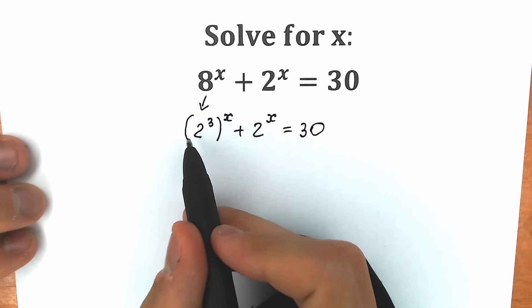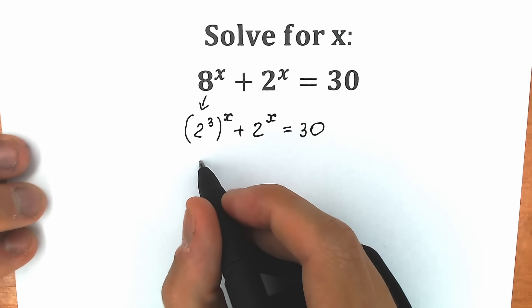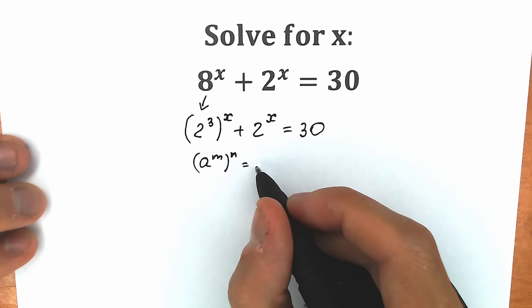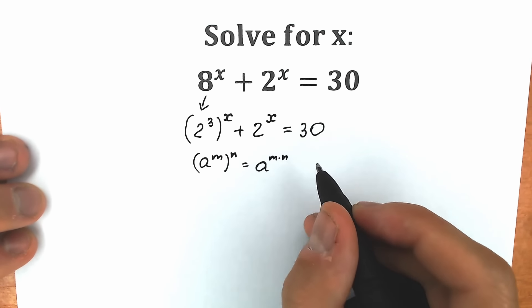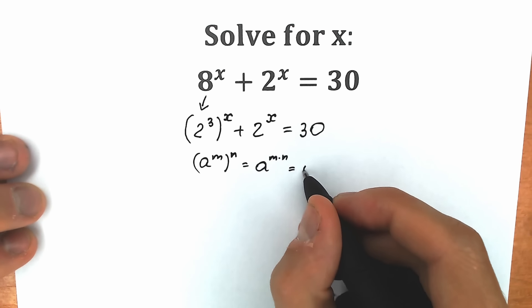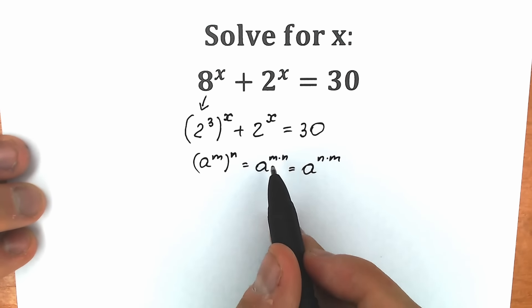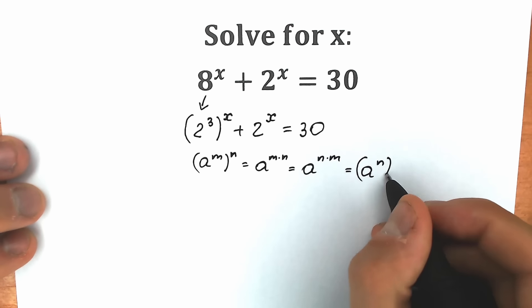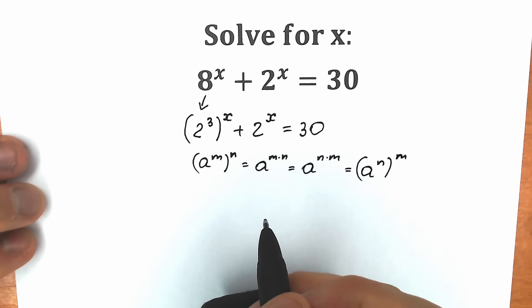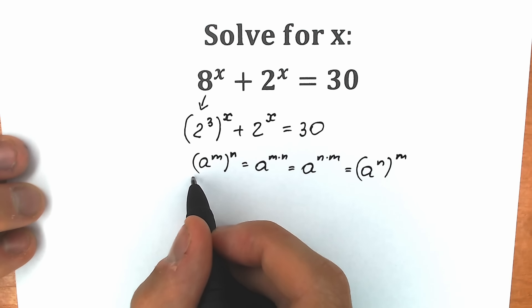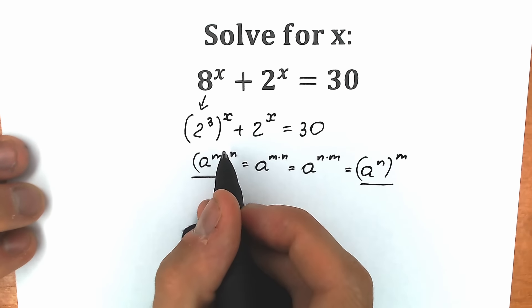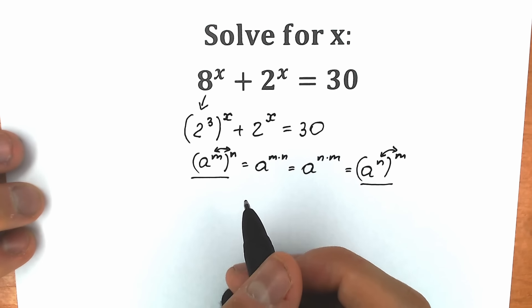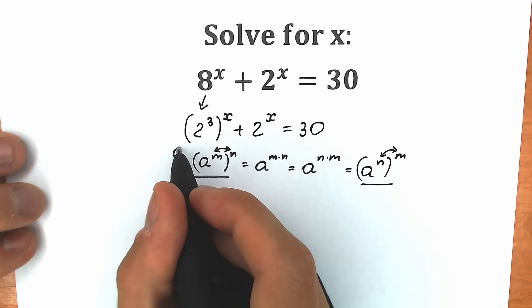Now if we look closely, we have an expression like a to the power m raised to the power n, and from school you need to know that we multiply m times n. But I need a slightly different form — when we write a to the power n raised to the power m, we can swap n and m because this is multiplication. So we can write n inside the parenthesis and m outside. According to this property, all the time when we have this expression we can swap our powers.